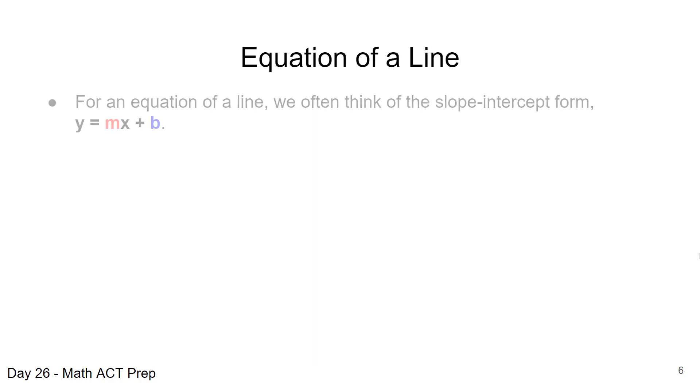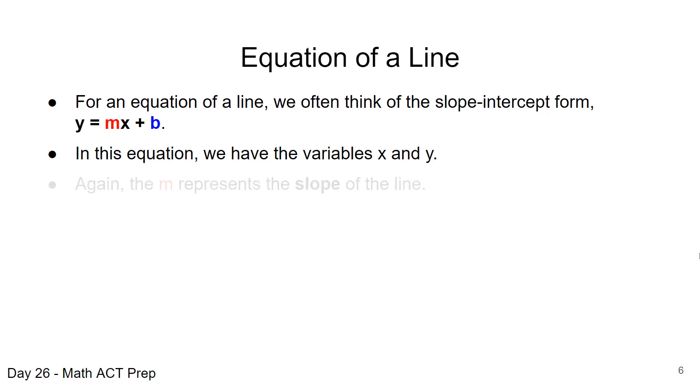Now let's look at an equation of a line. So oftentimes you'll see questions on the ACT that ask us or make use of the slope-intercept form of the equation of a line, and that is y equals mx plus b. In this equation, we have the variables x and y.